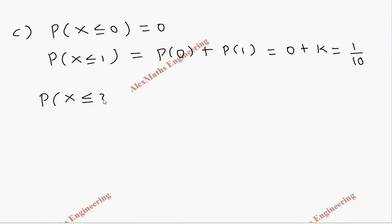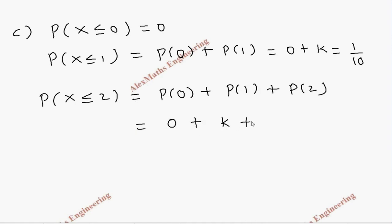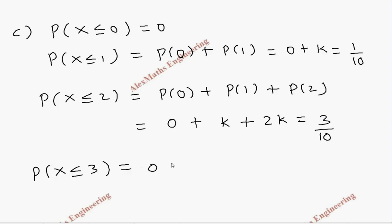Trying P(X ≤ 2) = P(0) + P(1) + P(2) = 0 + k + 2k = 3k = 3/10. Then P(X ≤ 3) = 0 + k + 2k + 2k = 5k = 5/10, which reduces to 1/2. But we need strictly greater than half, so we continue.